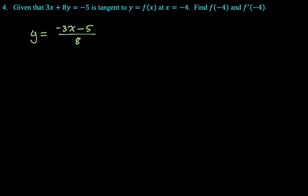So what do we know about a tangent line? We know that if we substitute the point of tangency, the function and the tangent line have the same value. So to find f(-4), I just need to take negative four and plug it into the tangent line. So f(-4) is going to be -3 times -4, which is 12 minus 5 over 8, so 7/8.